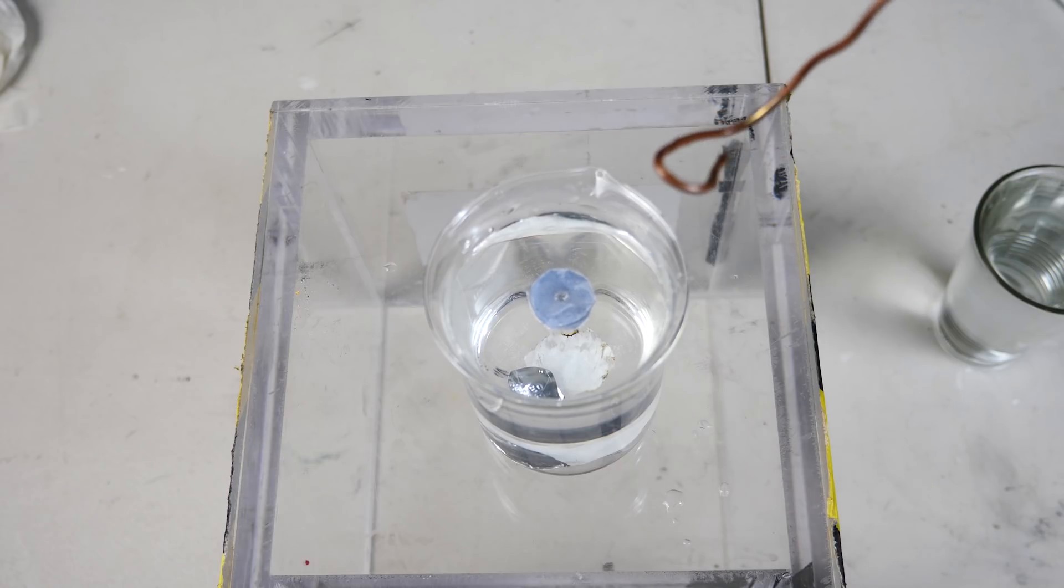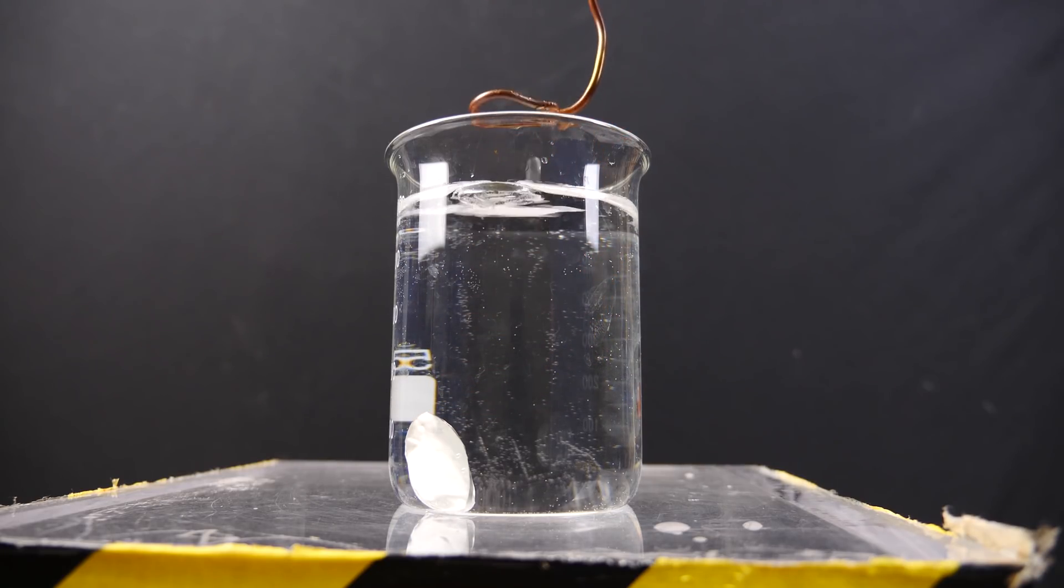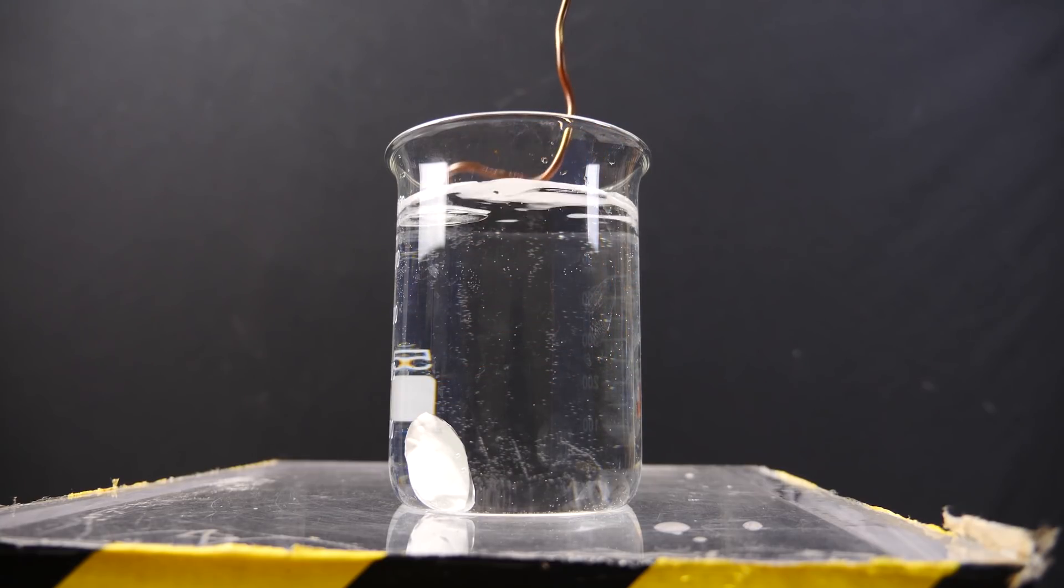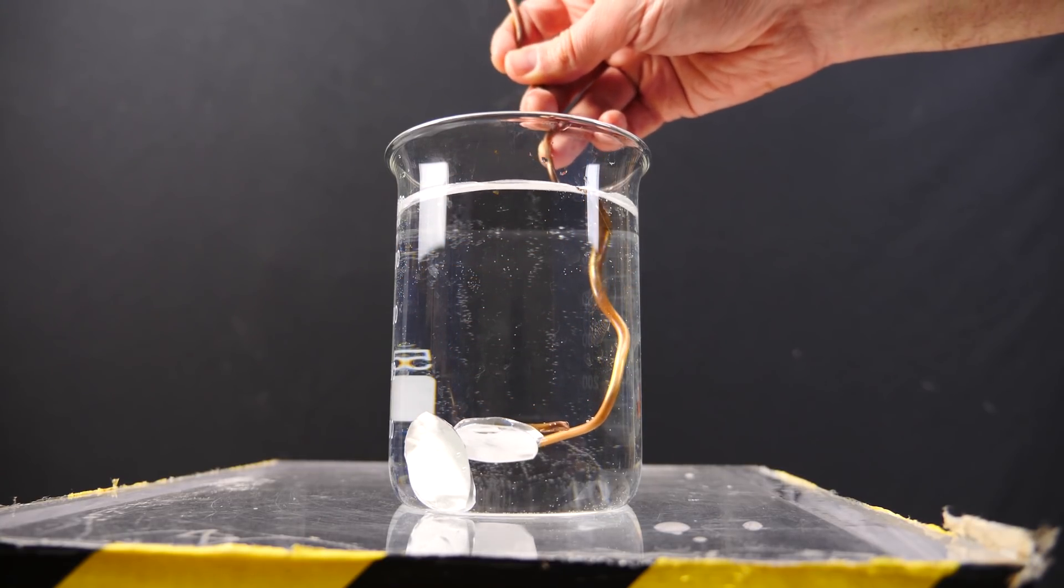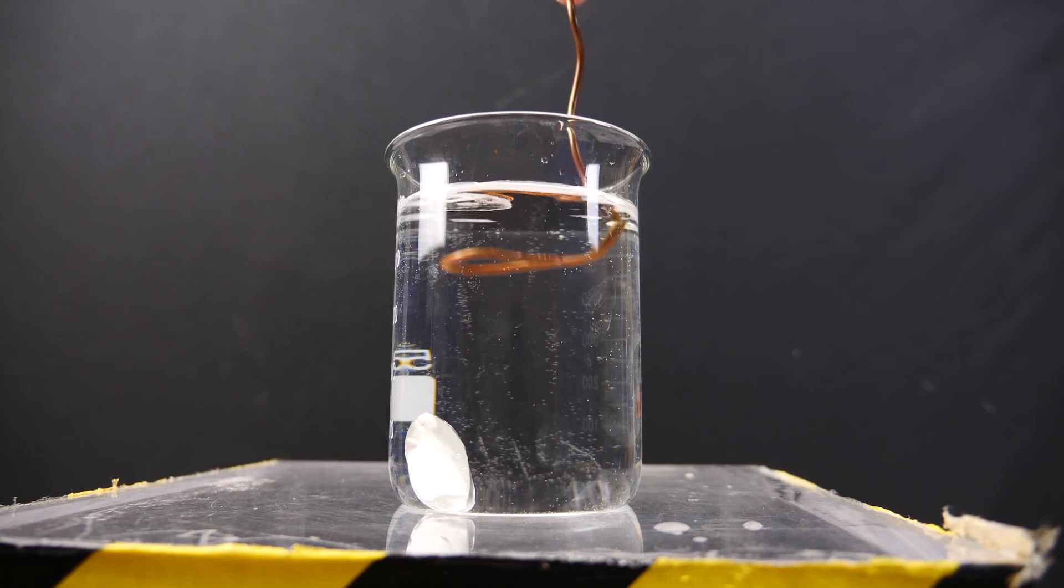But now watch what happens when we try to sink our aluminum boat that has been treated. It just pops back up. So no matter what I do to try to keep it down, it just pops right back up. It's completely unsinkable.